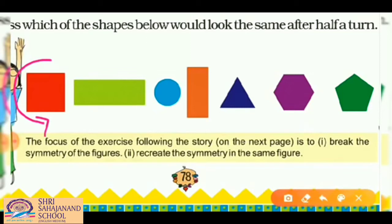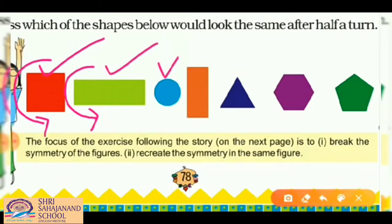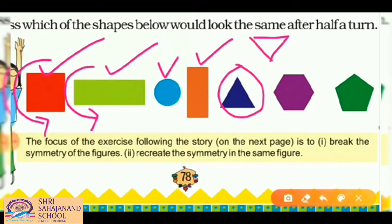First is a square — if you give it a half turn, it looks the same. Second is a rectangle — it also looks the same after a half turn. Then a circle — yes, it looks the same. Another rectangle — also the same. Now a triangle: if you give it a half turn, it looks different, so it does not look the same.